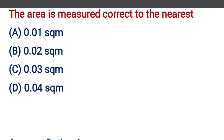The area is measured correct to the nearest — option A: 0.01 m², option B: 0.02 m², option C: 0.03 m², option D: 0.04 m². The correct answer is option A, 0.01 m².